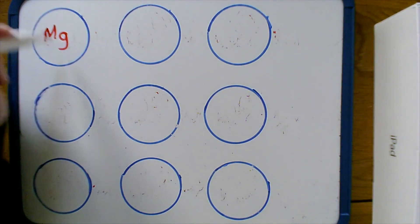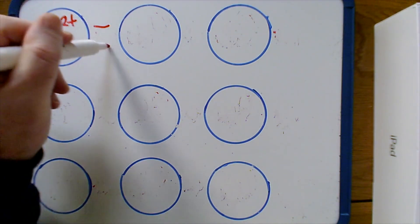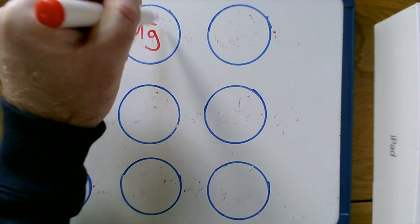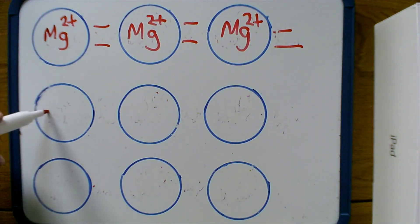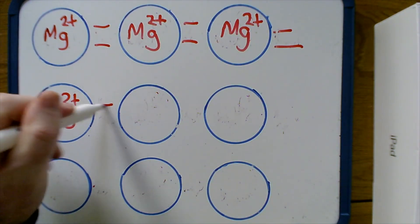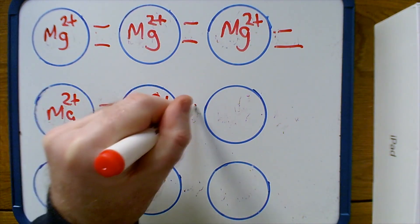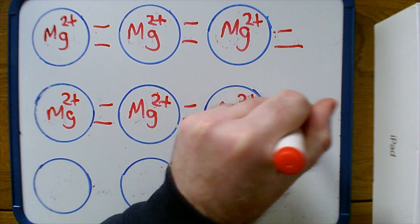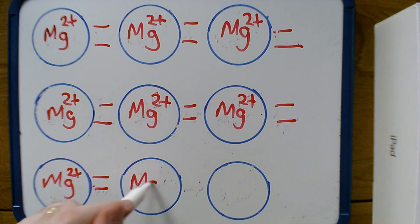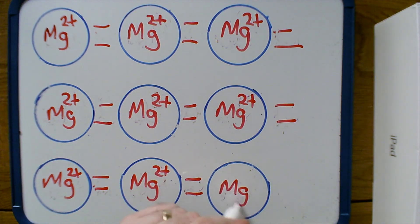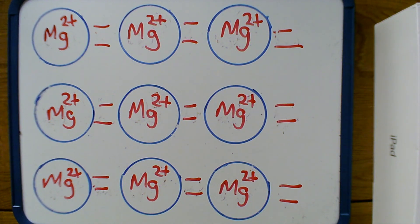Now let's look at some of the other properties by looking at magnesium. Magnesium is a group two element, so when magnesium forms an ion it forms a two plus charge. For every magnesium ion that I form, I lose two electrons — so I'm drawing two electrons every time I form a magnesium ion. In the case of magnesium, we have more delocalized electrons. The electrons are like the glue holding the whole structure together, so the more electrons you have, the more glue you have, and the stronger the forces and bonding holding the metal together. Metals in general have quite high melting points, but magnesium has a significantly higher melting point than sodium because we've got a greater charge on the ion and more delocalized electrons, so the bonding in magnesium is much stronger than in sodium.